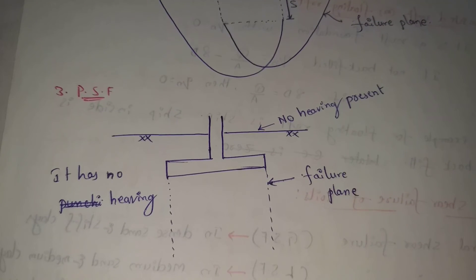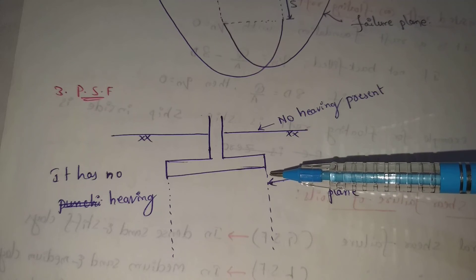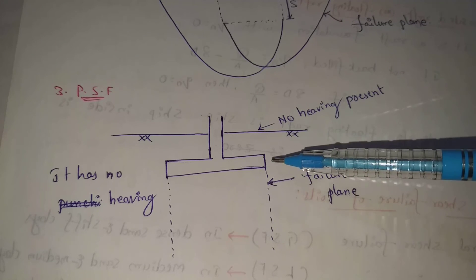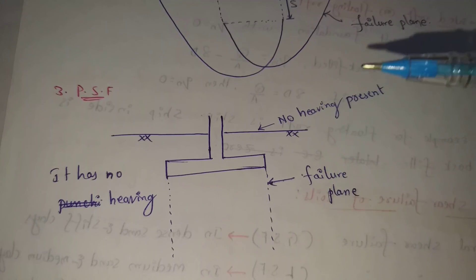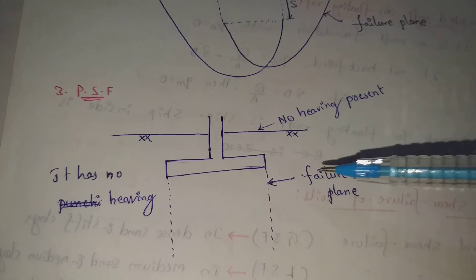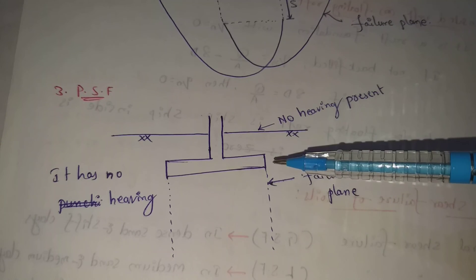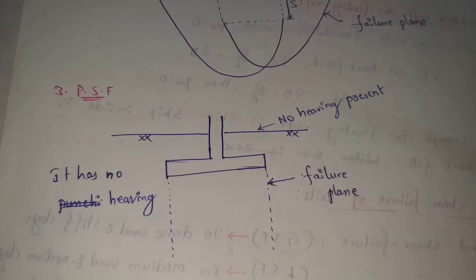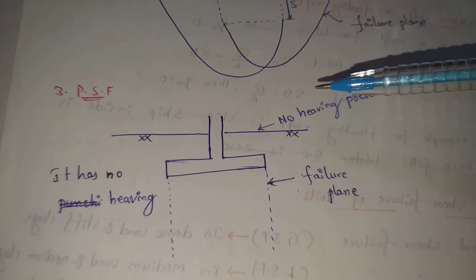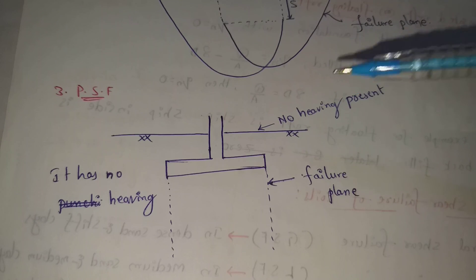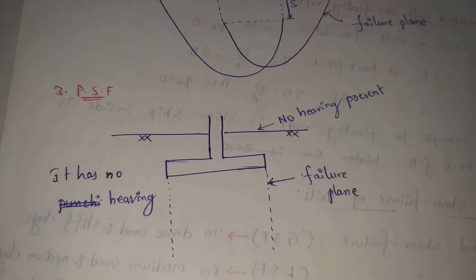PSF means Punching Shear Failure. In this case, the foundation's failure plane is directed downwards and does not extend up to ground level — the failure plane remains below ground level. As a result, no heaving occurs on the surface. Punching Shear Failure occurs in loose sand and soft clays.